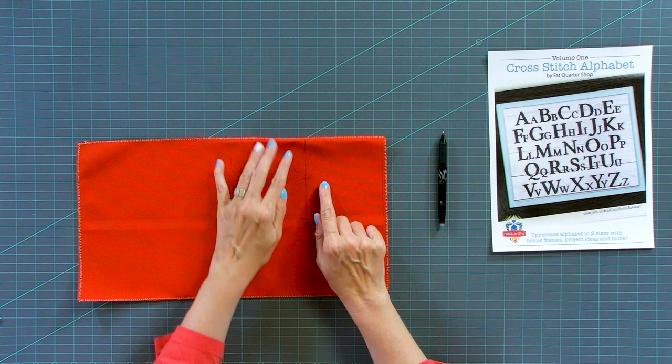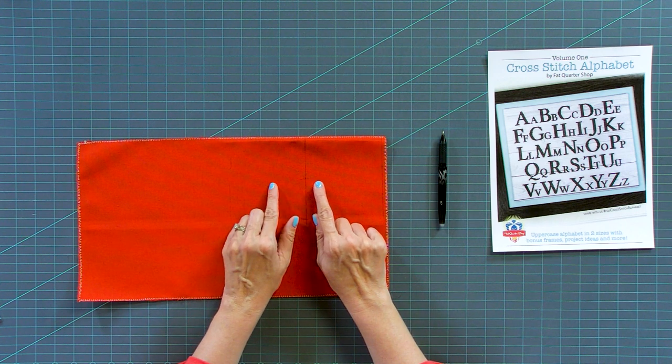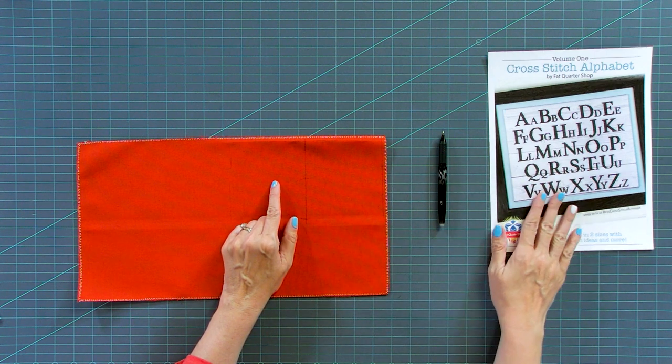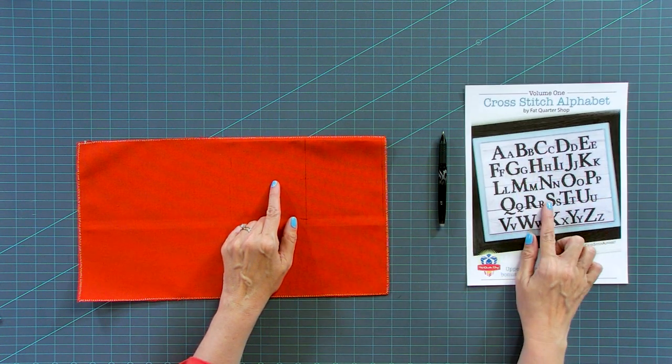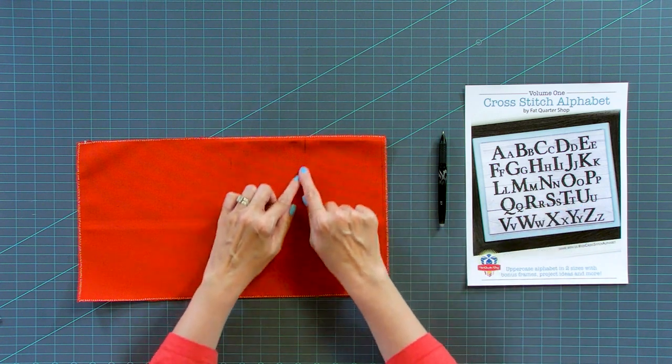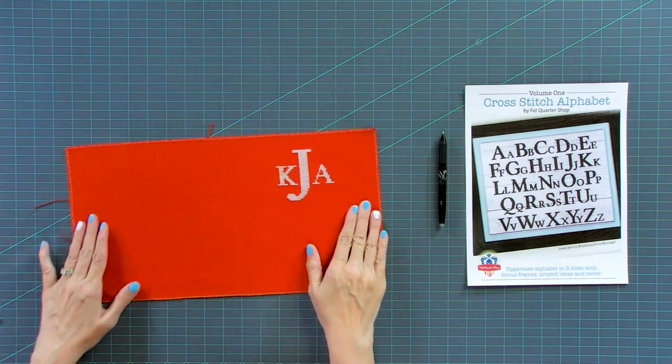And then you're gonna figure out your spacing left and right for your first and middle name. And what you can do is just get some graph paper and draw it out to make sure you visually like it. Then just go ahead and stitch it. And this is how ours look.